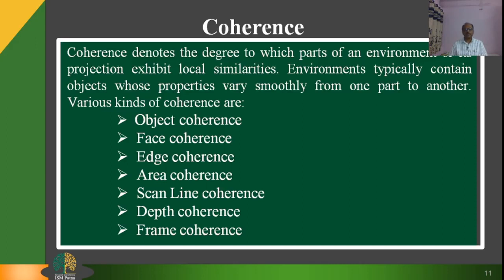Scan line coherence refers to the fact that the set of visible object spans determined for one scan line of an image typically differs little from the set of the previous line. Depth coherence means that adjacent parts of the same surface are typically close in depth, whereas different surfaces at the same screen location are typically separated farther apart in depth. Once the depth at one point of a surface is calculated, the depth at the rest of the surface can often be determined by a simple difference equation.